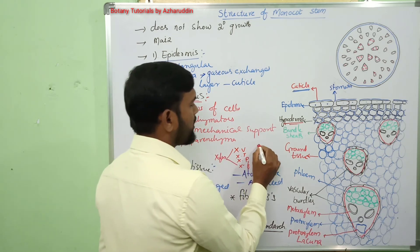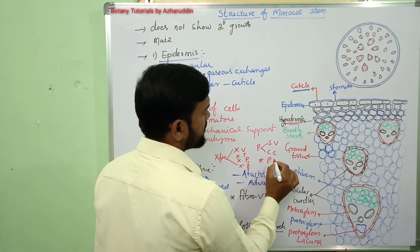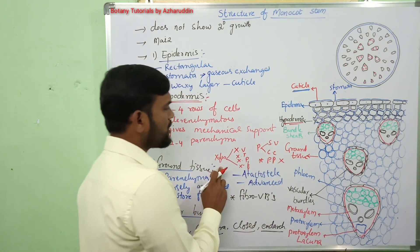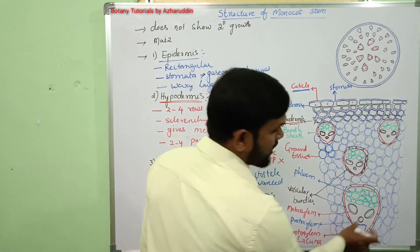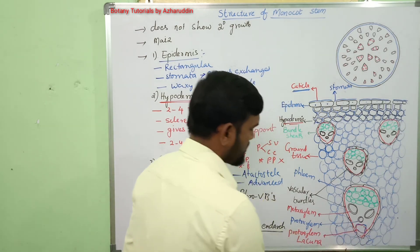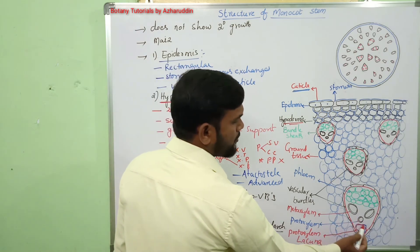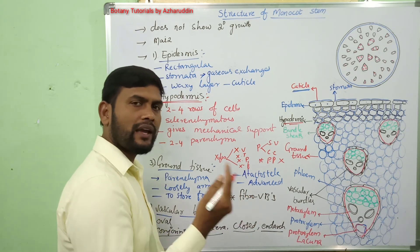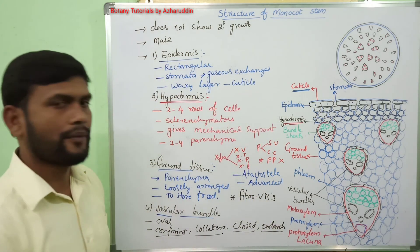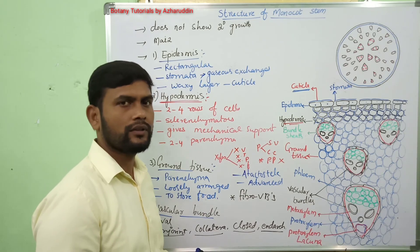The vascular bundles contain xylem and phloem. Xylem contains xylem vessels, xylem tracheids, xylem parenchyma, and xylem fibers. Phloem contains sieve tubes and companion cells; phloem parenchyma is absent. At maturity, the xylem tracheids and vessels are disorganized — they are crushed to form a canal-like structure called the protoxylem lacuna. This is about the structure of monocot stem.